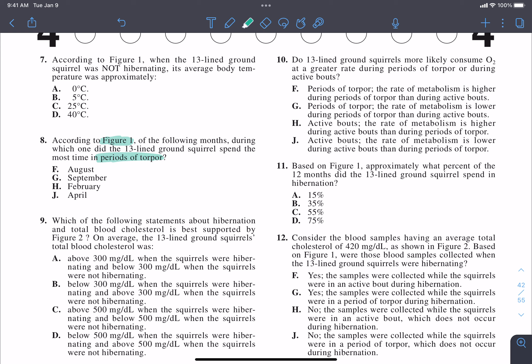But not every question has Figure 1. Some of them have Figure 2, so I know to circle Figure 1. Not all of them have periods of torpor, so I know I'm going to circle or underline periods of torpor. These are the unique things that are part of each question. That's what I'm looking to underline and circle here.